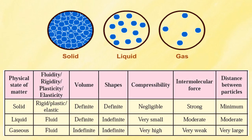On page number 40 of your textbook, we have a chart stating the characteristics of states of matter. For solids: they are rigid, plastic and elastic — rigid means it cannot change its shape. Volume is definite, and solids have definite shape as well. Compressibility is negligible, meaning in some cases they can compress, in some they cannot. Intermolecular force is very strong, and distance between particles is minimum — you can refer to the diagram to verify this.